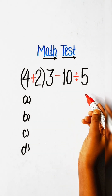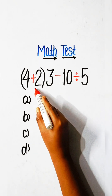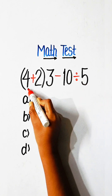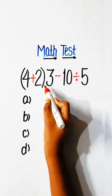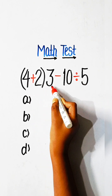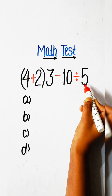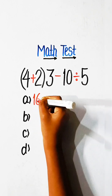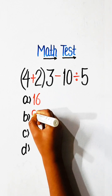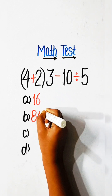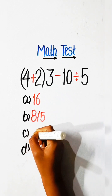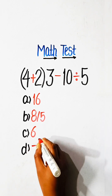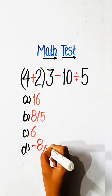Hello friends, let's solve another math expression: 4 plus 2, multiplied by 3, minus 10 divided by 5 — equals what? Option A: 16, Option B: 8 upon 5, Option C: 6, Option D: minus 8 upon 5.